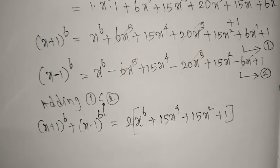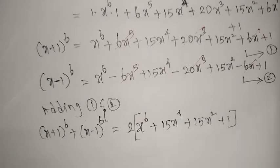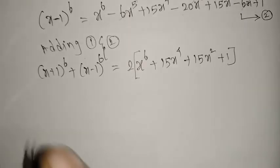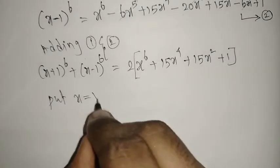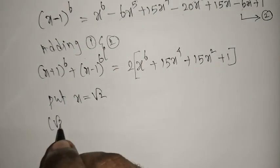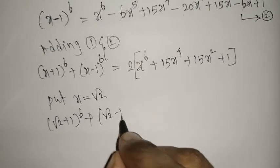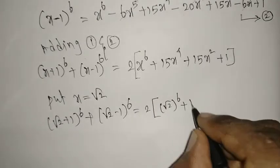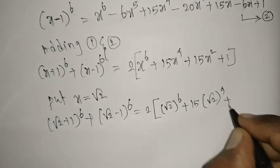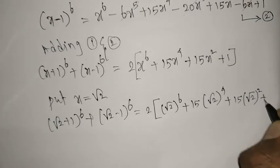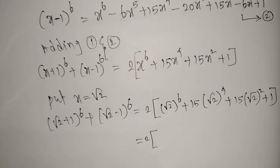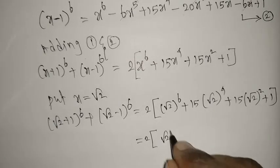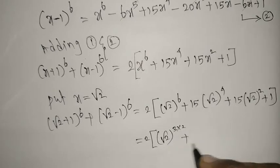Using this result, we evaluate (√2 + 1)⁶ + (√2 − 1)⁶. We substitute x = √2. This gives 2[(√2)⁶ + 15(√2)⁴ + 15(√2)² + 1].